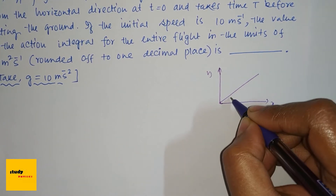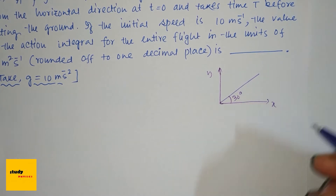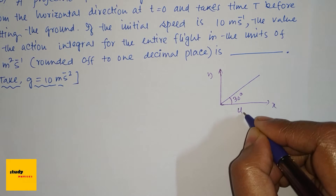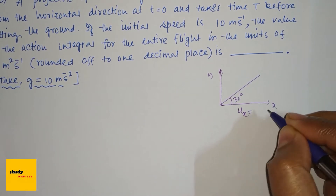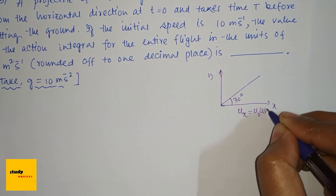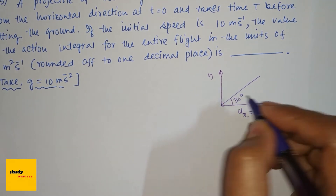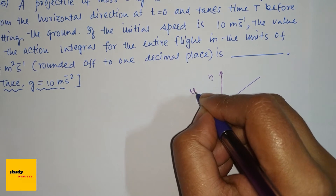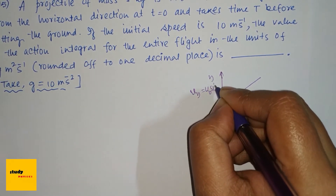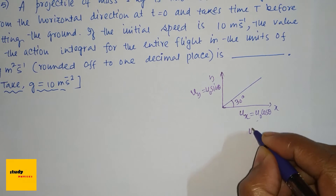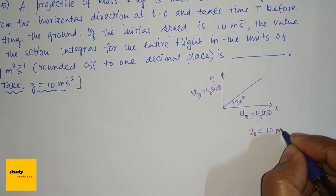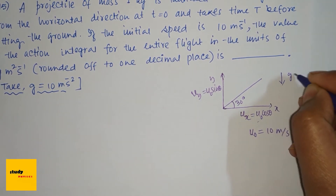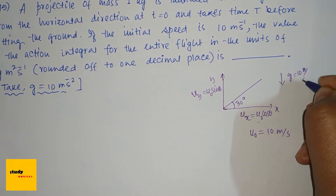The projectile is launched at angle 30 degrees. The velocity components are: in the x-direction, u_x = u₀ cos θ, where u₀ is the initial velocity; and in the y-direction, u_y = u₀ sin θ. Here u₀ = 10 m/s and g = 10 m/s².